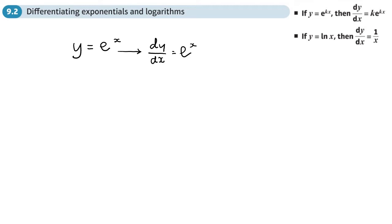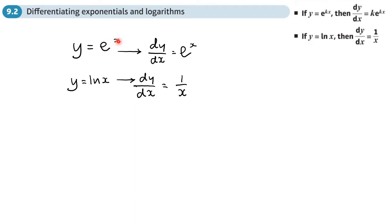If y equals log(x), then dy/dx equals 1 over x. But what if instead of x you had something like x squared, 2x, or 5x minus 1? We've got some rules that are going to help with those cases.